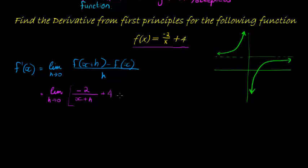This is the expression for f(x+h) minus f of x. f of x is just that thing, so minus negative 2 over x plus 4, divided by h.